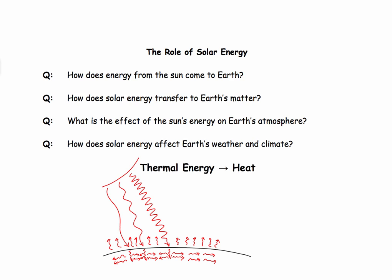How does energy from the sun come to the earth? How does that happen? How does it get through space?